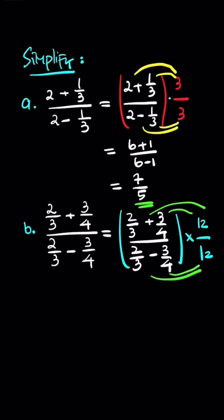So this is going to be 2 out of 3 times 12, that's 24 divided by 3, that is 8. Plus this is 9. Out of this is 8 and then minus 9. So we have 17 over negative 1, that equals negative 17. That's the answer.